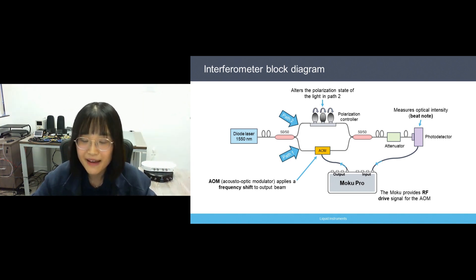The two beams then recombine and pass through an adjustable attenuator to avoid saturating the flow detector. And the flow detector captures the optical intensity of the beat node with its output routed to the input of Moku.